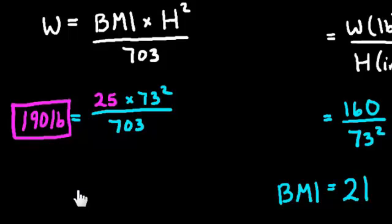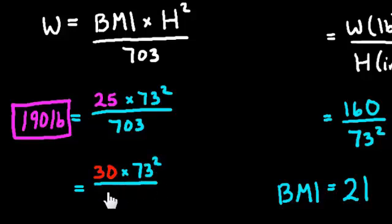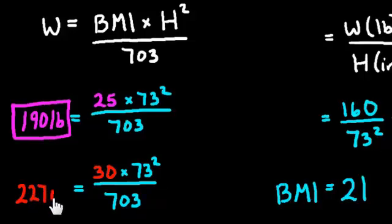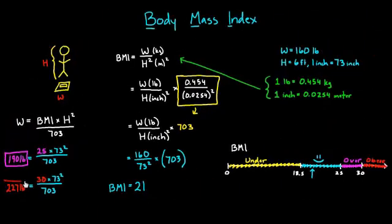And I can even do this for a BMI of 30. I can say, what about a BMI of 30? My current height, again, is 73 inches. That's not going to change. And I can do the math and find out that, in this case, my weight would be 227 pounds. So if I was 227 pounds, given my height, I would be considered obese.